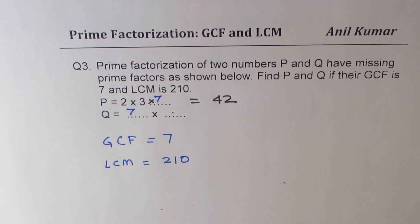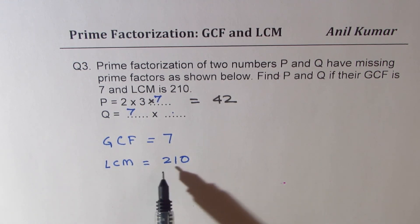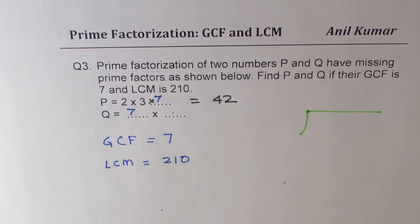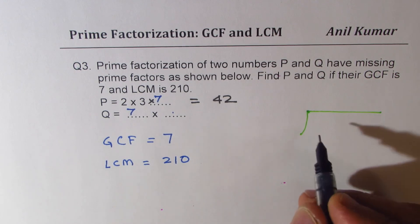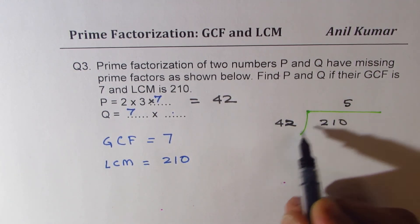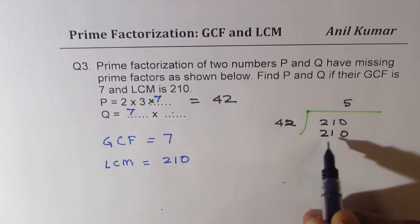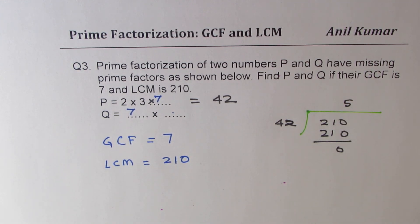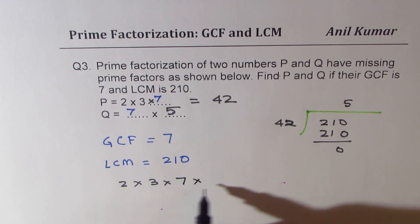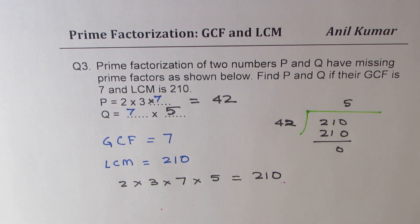So P = 42. But LCM is 210. To find the missing factor for Q, we divide: 210 ÷ 42 = 5. So the missing number is 5. This means 2×3×7×5 = 210, which confirms the LCM. That is how we find the missing prime factor.